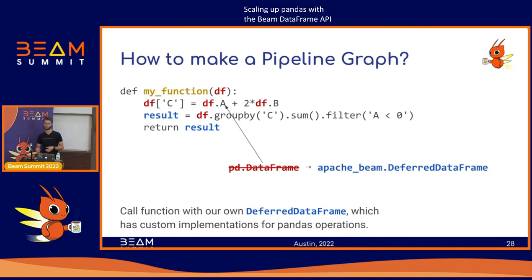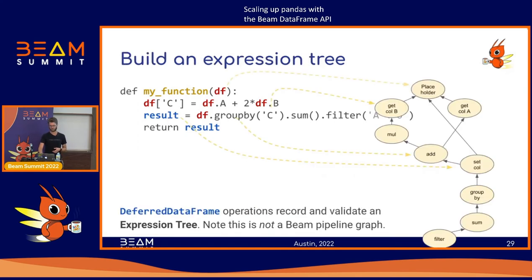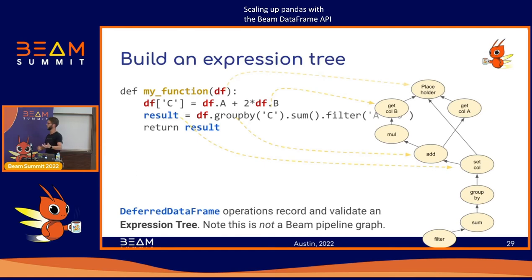So how does the DataFrame API actually work under the hood? When DataFrame transform calls your function, instead of passing in a real Pandas DataFrame with all your data in memory, we pass in an Apache Beam deferred DataFrame object that has all the equivalent Pandas operations on it. As we run through your logic, rather than eagerly performing the computation as Pandas does, we build up an expression tree representing what the computation is trying to do. At the root is a placeholder for the actual input, and there are nodes for getting column A, getting column B, multiplying them, and adding the results together.